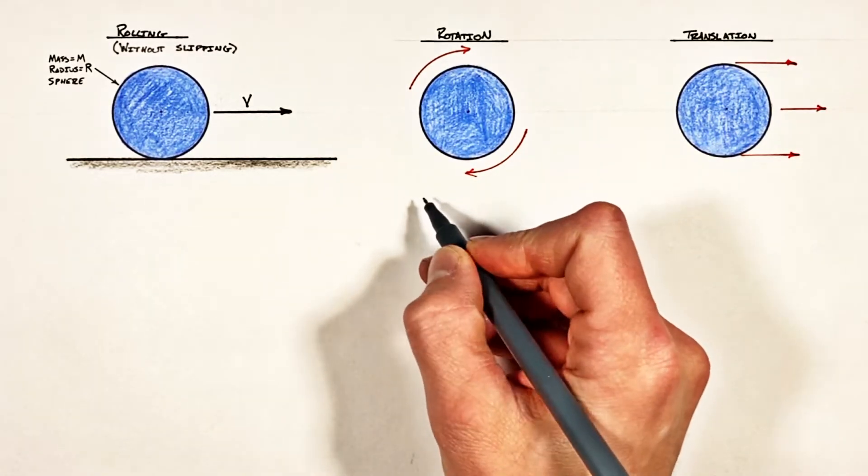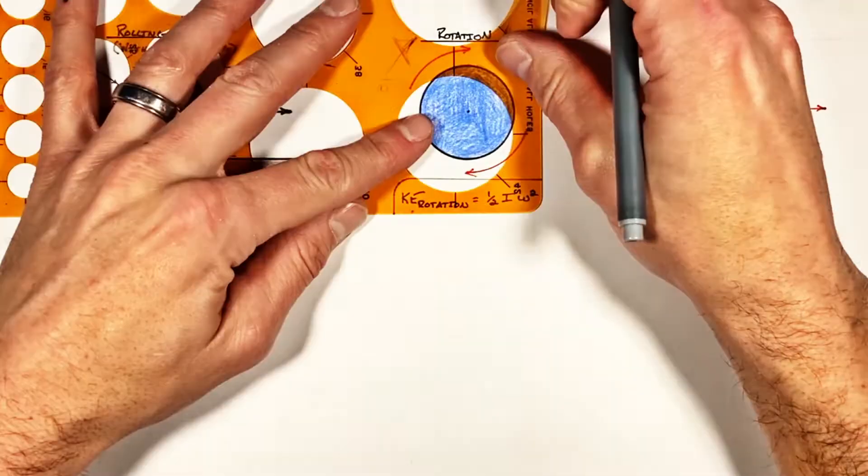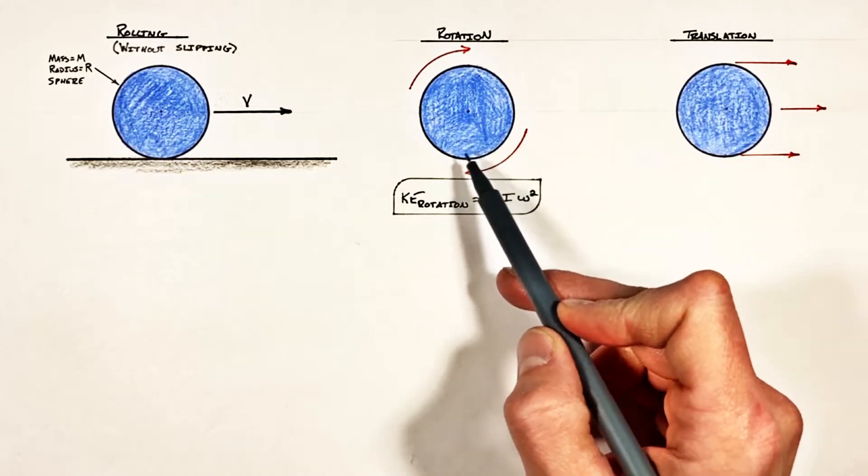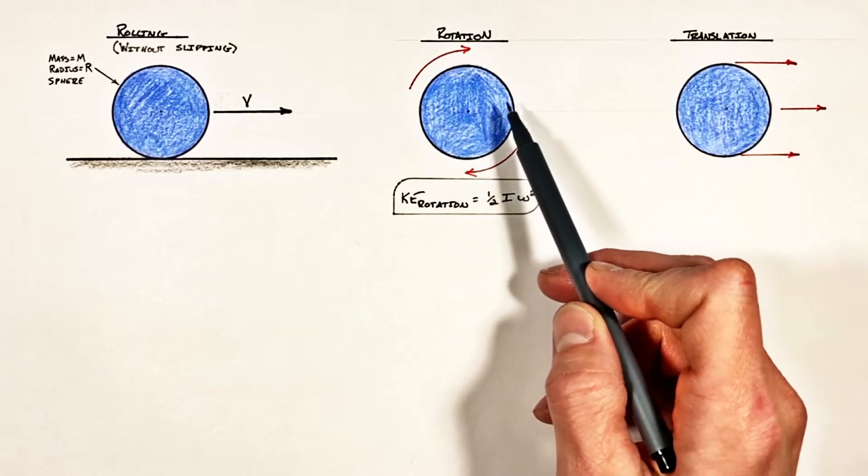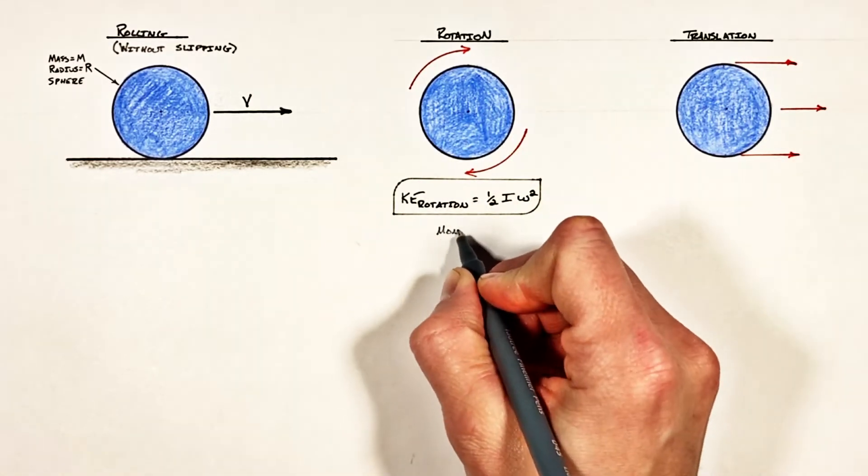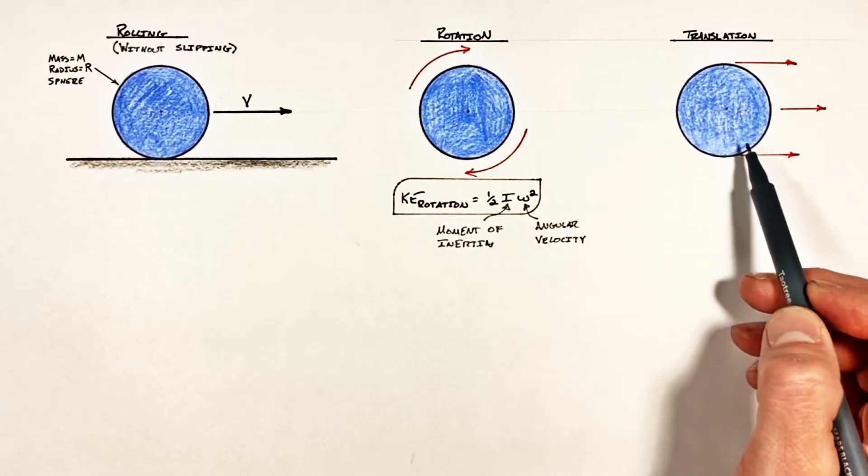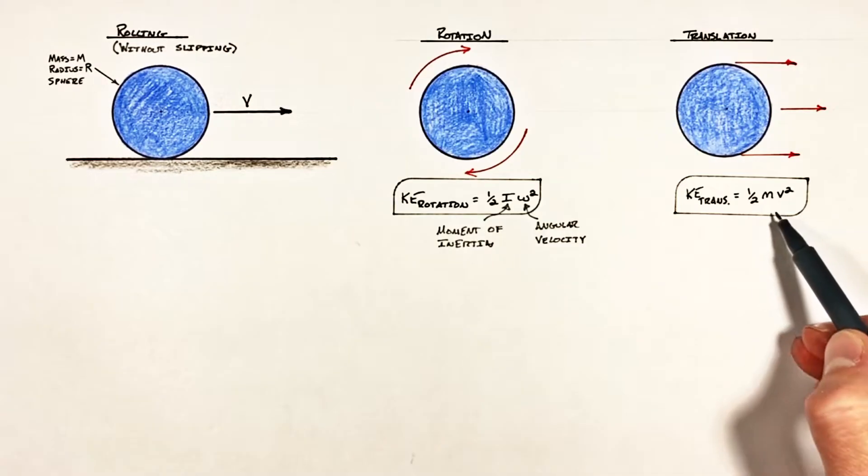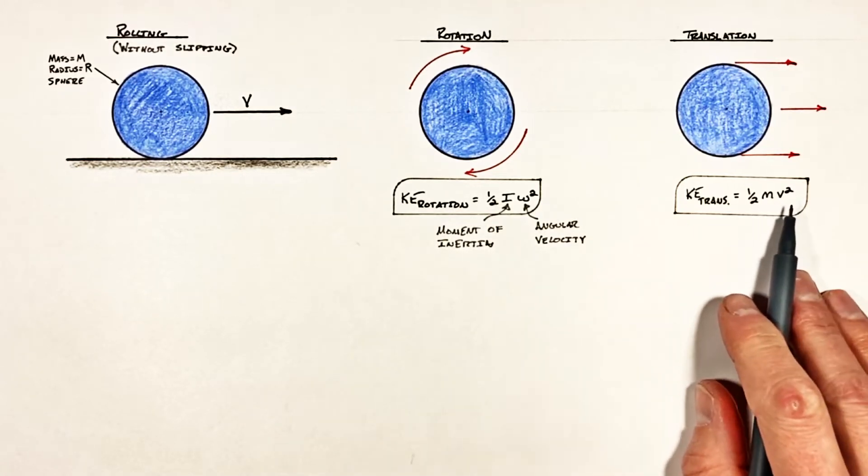Now we know the kinetic energy of a rotating object is given by one-half I omega squared, where I is the rotational moment of inertia and omega is the angular velocity of this rotating object. And the kinetic energy of an object in translation is given by one-half mv squared.